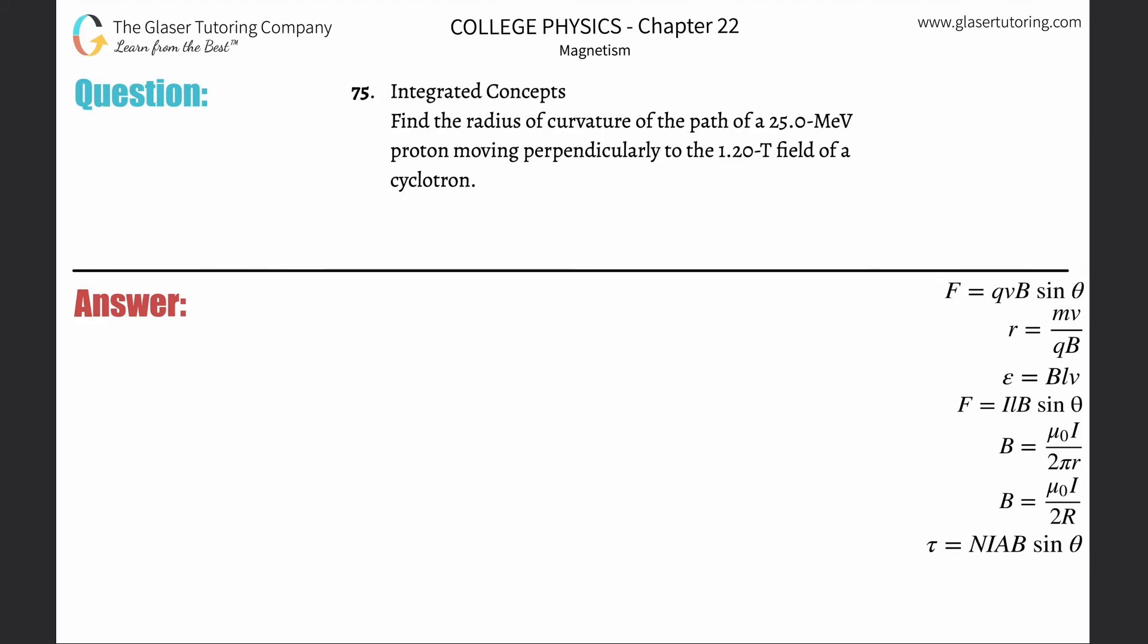Number 75, Integrated Concepts. Find the radius of curvature of the path of a 25 mega electron volt proton moving perpendicularly to the 1.2 tesla field of a cyclotron.